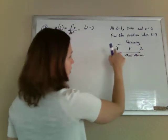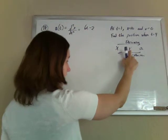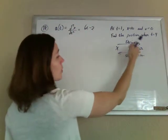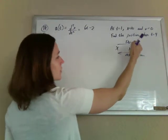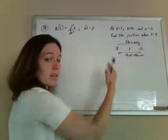The derivative of the position is the velocity, the derivative of the velocity is the acceleration, so therefore to go backwards, the antiderivative of the acceleration is the velocity, and the antiderivative of the velocity is the position.